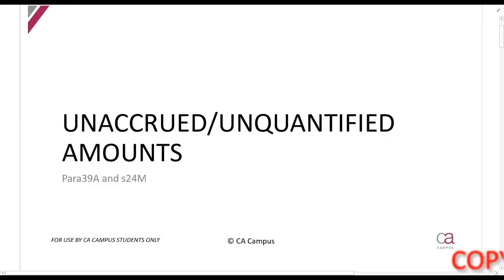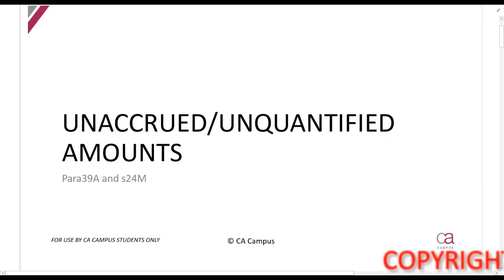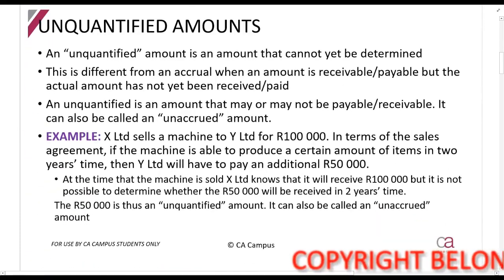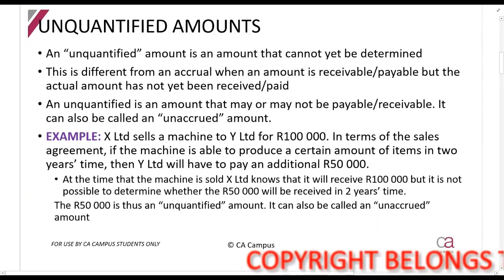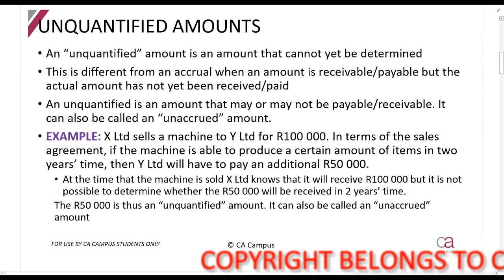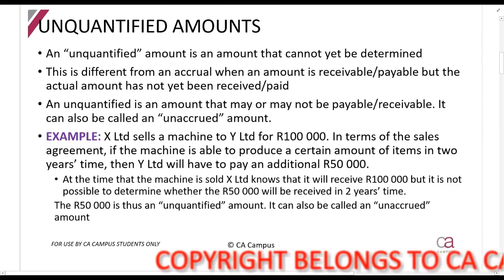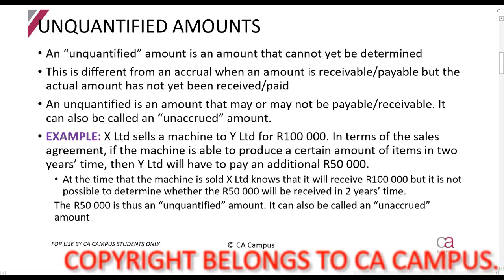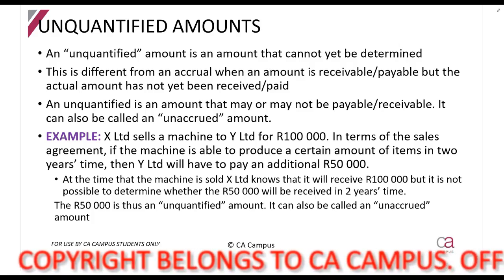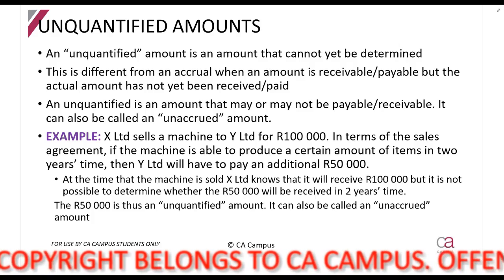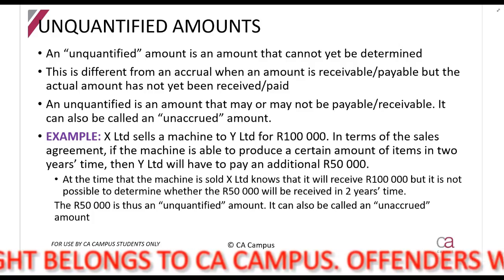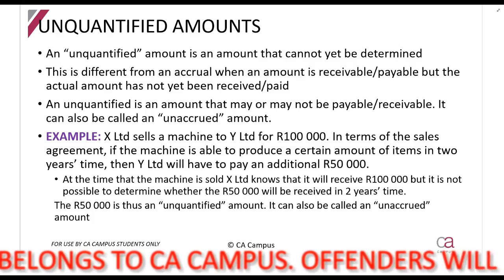Paragraph 39A and Section 24M talks about unaccrued or unquantified amounts. An unquantified amount is an amount that cannot yet be determined — we don't know how much it's going to be. This can be an amount which is payable or receivable, sometimes also called an unaccrued amount.